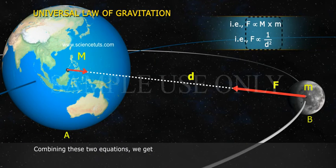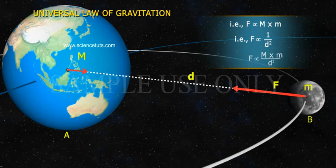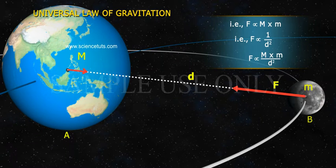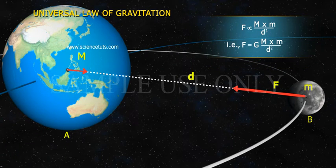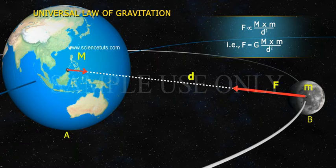Combining these two equations we get F is directly proportional to M into m by d square. That is, F is equal to G into M into m by d square.